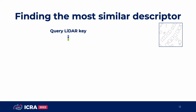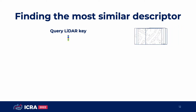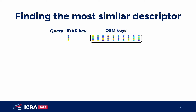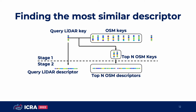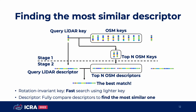We convert the query LiDAR scan into a query LiDAR key. On the other side, OSM keys are built in advance. By comparing OSM keys with the query LiDAR key, we can find the top-N OSM keys. We can use these keys to localize, but we can obtain better results by comparing the full descriptors. Therefore, in stage 2, we convert keys into descriptors and compare them again. Finally, we can find the best match and localize the vehicle. In stage 1, we can search faster using the lightweight key, and we find the most similar one in stage 2.